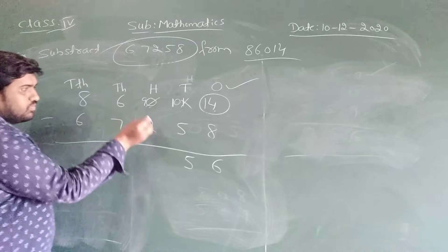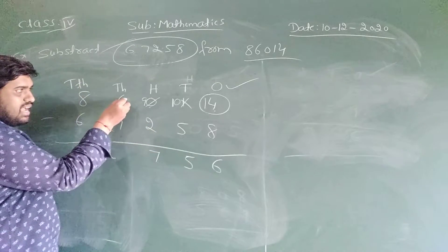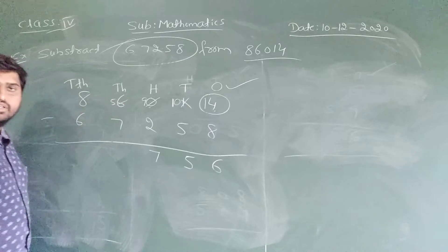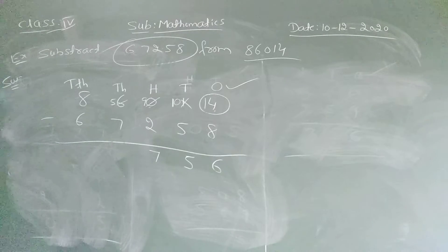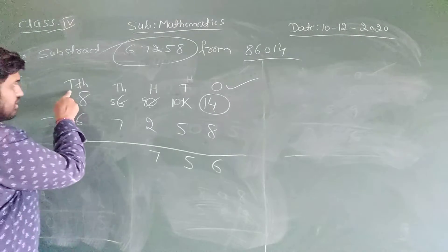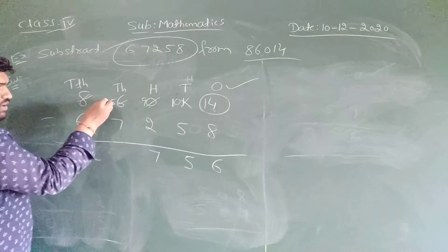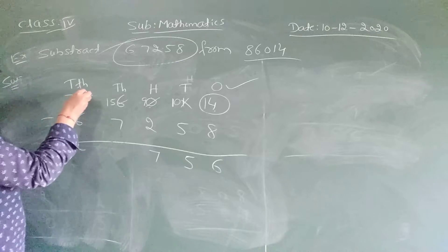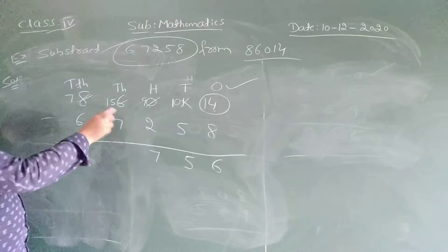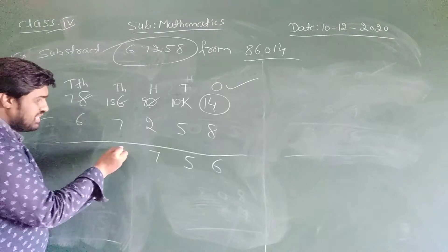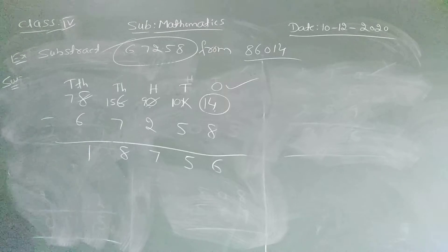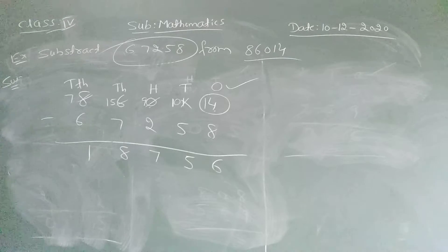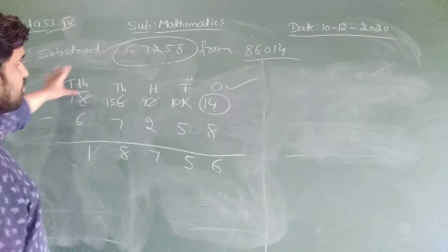Now in hundreds: 9 minus 2 is 7. And in thousands we have 5 — is it possible to subtract 7 here? No. Again we have to take 1 borrow from the ten-thousands place. Then it becomes 15 and the ten-thousands digit becomes 7. Now 15 minus 7 is 8. And 7 minus 6 is 1. So the final answer is 18,782.